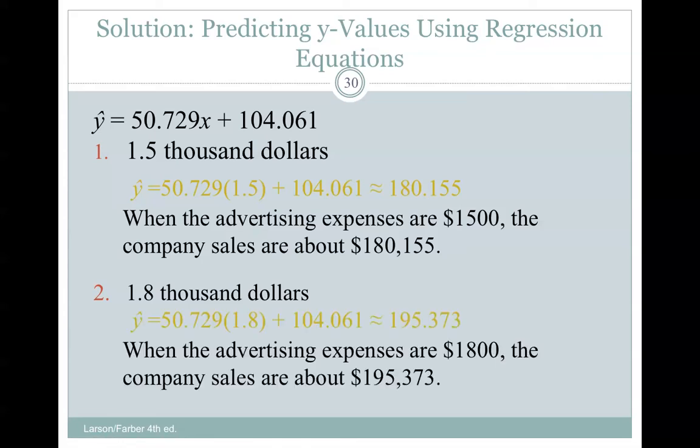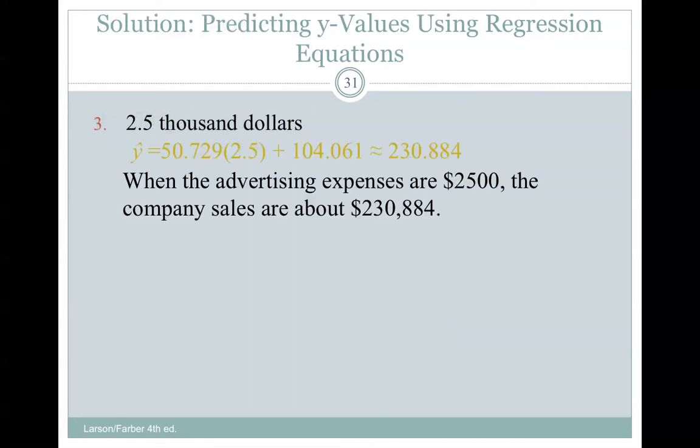So 1.8 thousand, we would do the exact same thing, and get just a little bit higher number because we have put more money in the advertising expenditures, and there's a positive linear correlation. 2.5, we do the exact same thing, plug it in for x and solve for y, and we get 230,884.